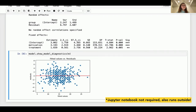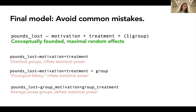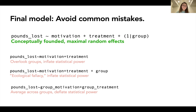The final model that Tizan enables end users to author avoids common statistical mistakes documented in the statistical literature. Tizan focuses end users on authoring conceptually founded and justifiable models and automatically infers maximal random effects that allow for generalizability. In addition to the code to fit and visualize the statistical model, Tizan outputs a log of interactions with the Tizan GUI for reproducibility.